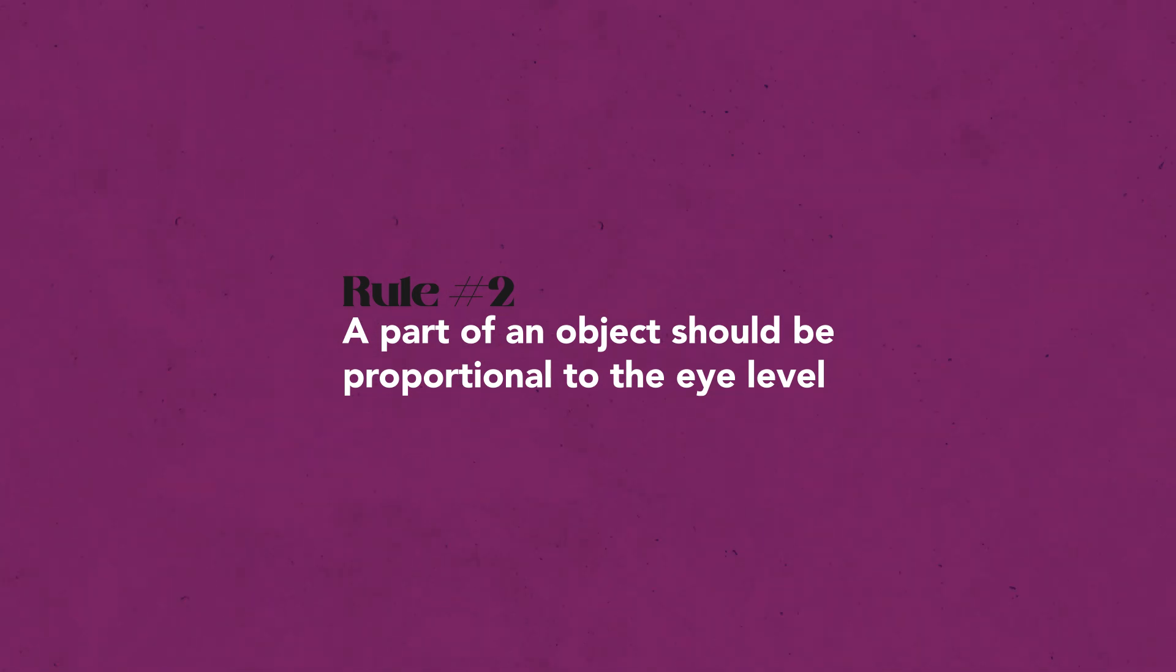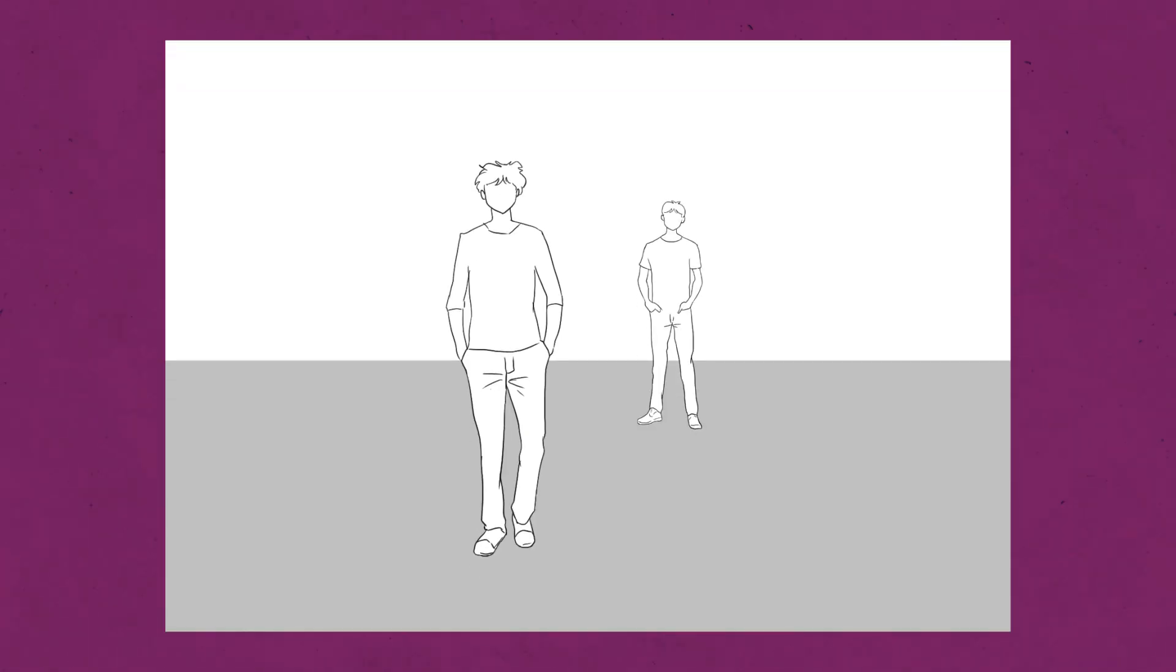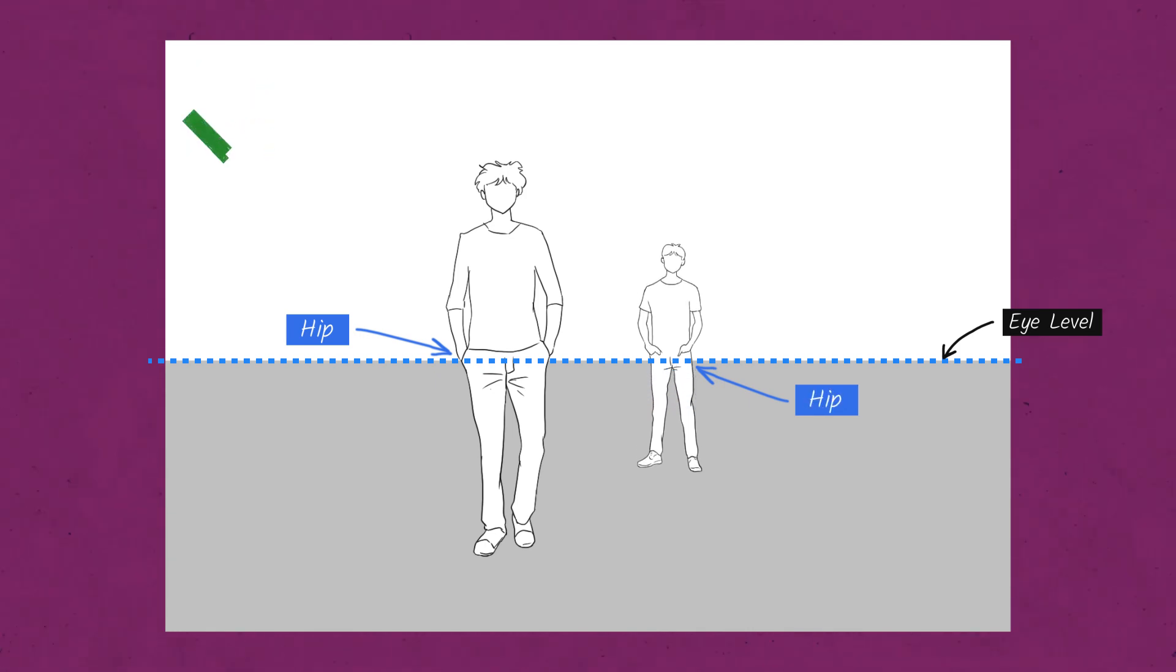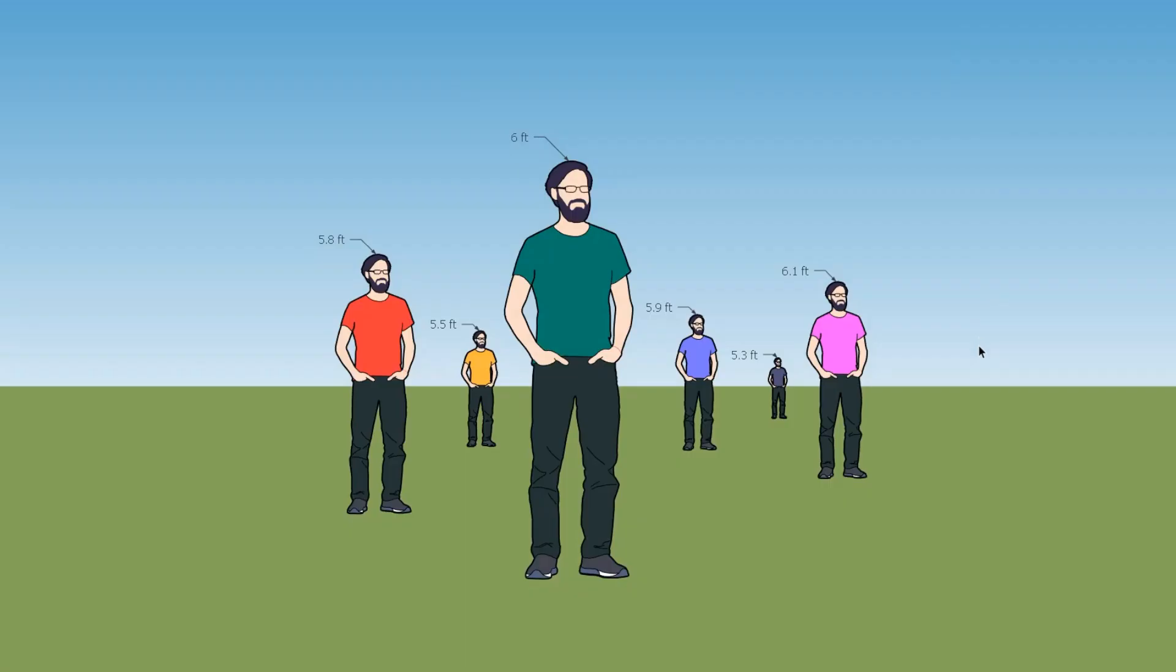What that means is that the eye level should hit the same part of the object. Let's go back to this drawing. The eye level doesn't hit both of the models at the same body part. The eye level on this first model hits the hip, but the eye level on the second model hits the knees. That is what makes the perspective in this drawing incorrect. It's either their hip or knees should be lined up with the eye level to make convincing and realistic perspective. As the eye level moves, the body parts alignment will also move.